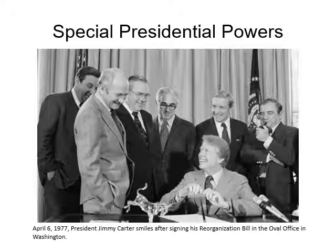The President's three special powers are executive orders, emergency powers, and executive privilege. Executive orders means the power to issue orders that have the force of law. Emergency powers are the broad powers exercised during times of national crisis. Executive privilege is the right of the chief executive and members of the administration to refuse to disclose confidential conversations or national security information to Congress or the courts.